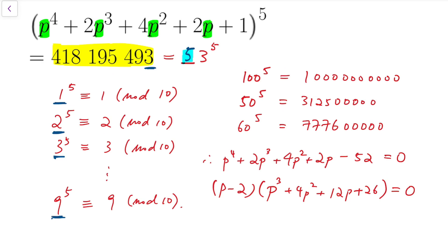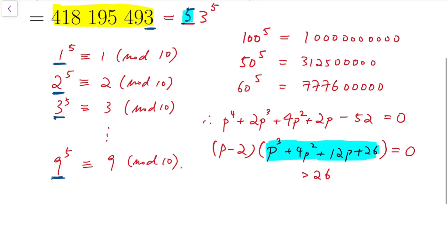So of course p can be 2, but otherwise we'll have p to satisfy this equation: p cubed plus 4p squared plus 12p plus 26 equals 0. But for this, this is actually an increasing function, at least for the case when p is non-negative, and when p equals 0 is already 26, so it's always larger than 26, so it's always positive. That means we can conclude that the only solution is p equals 2.